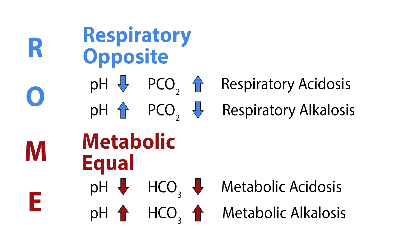Another way to remember acid-base imbalances is with the mnemonic ROME — Respiratory Opposite, Metabolic Equal. We know respiratory involves CO2, and CO2 will be going in the opposite direction of the pH. If the pH is low (acidotic), the CO2 will be high (also acidotic), resulting in respiratory acidosis. When the pH is high (alkalotic) and the CO2 is low (also alkalotic), we have respiratory alkalosis. We know metabolic involves the bicarbonate ion, HCO3. When the pH is low (acidotic) and the HCO3 is low (also acidotic), the result is metabolic acidosis. If the pH is high (alkalotic) and the HCO3 is also high (also alkalotic), we have metabolic alkalosis.